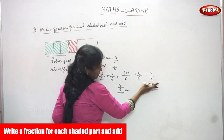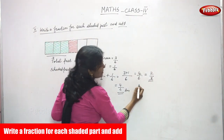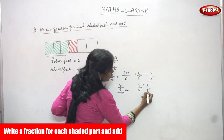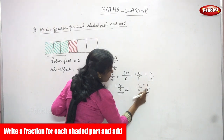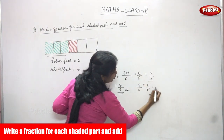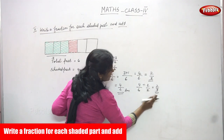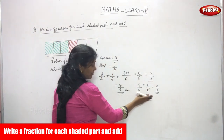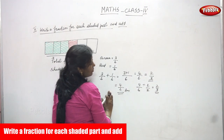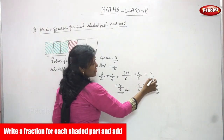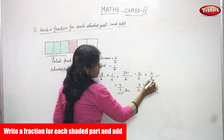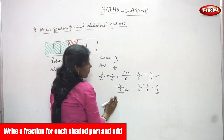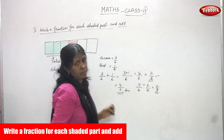If you simplify four by six — four divided by two is two and six divided by two is three — you get the equivalent fraction two by three. But I have written only the direct answer: four by six is the right answer for this question.